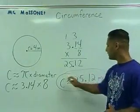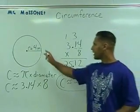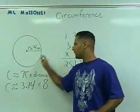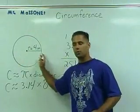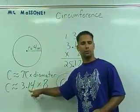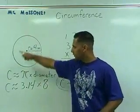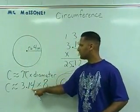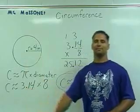This final answer is approximately 3 times bigger than the distance across the circle — that's where we get the value of pi, 3.14, from. The distance around the circle is 3.14 times bigger than the diameter.